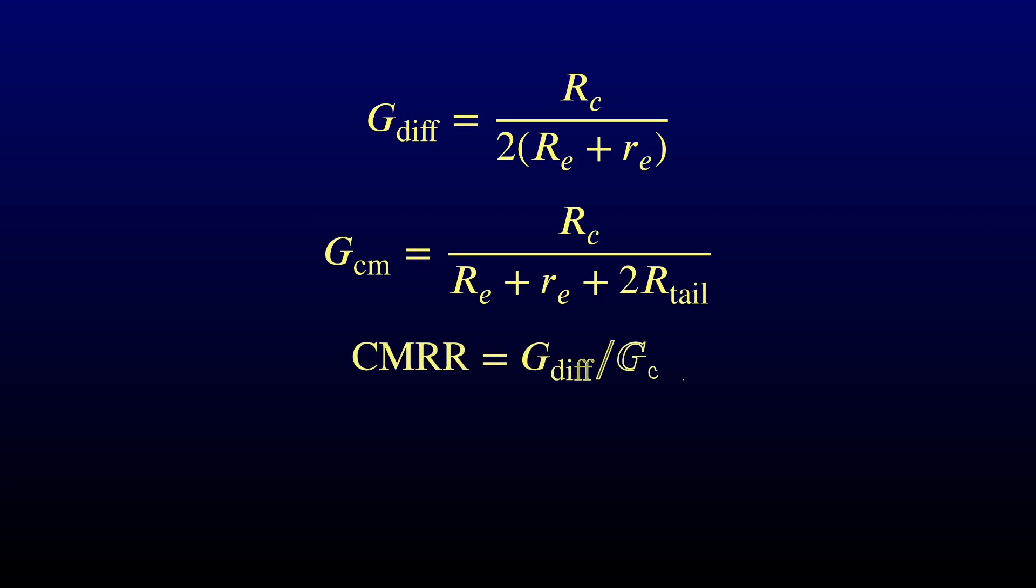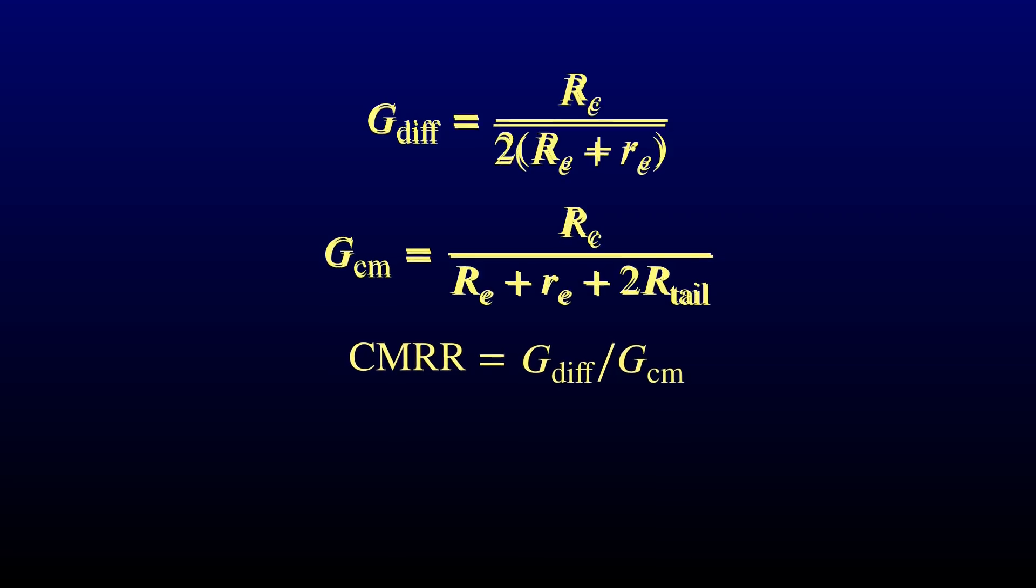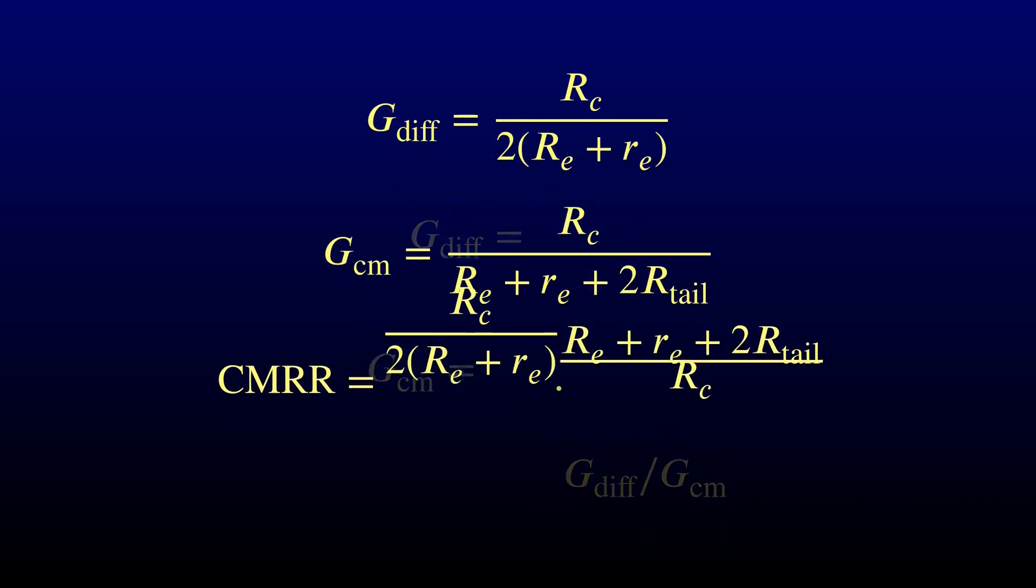We need to think about where the common mode rejection comes from. In the last episode, we derived equations for the differential gain and the common mode gain, and we defined the common mode rejection ratio as the ratio between them. Let's substitute the gain equations into the common mode rejection. I'll do that on Algebra Autopilot.